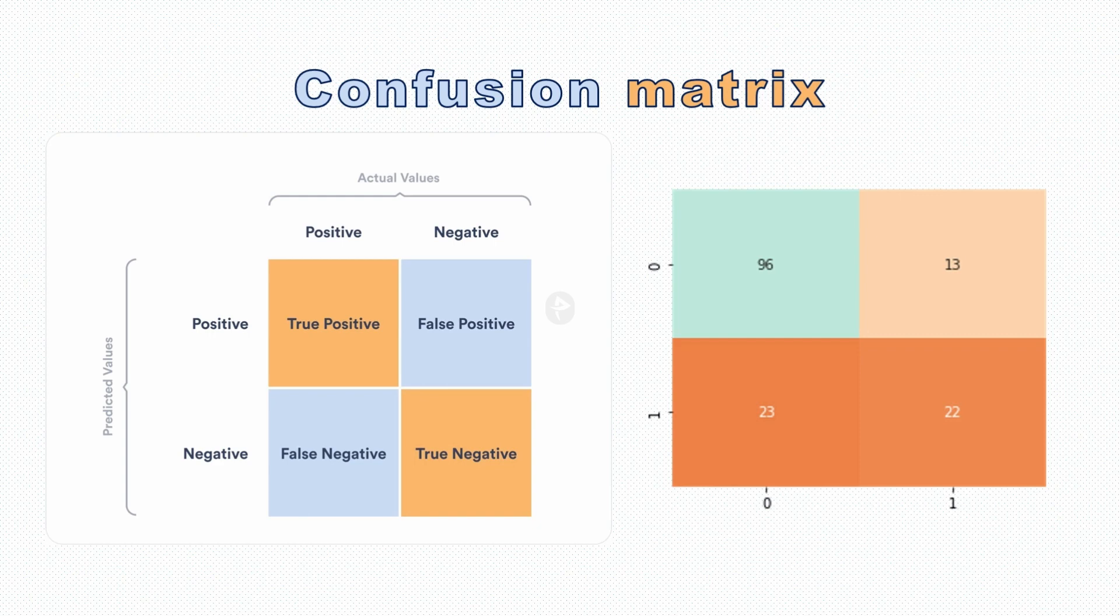The right side image is a confusion matrix from my machine learning problem. On x-axis we have two classes 0 and 1. Same on the y-axis we have two classes 0 and 1. The difference is the x-axis has the actual values and y-axis has the predicted values from machine learning model. We can see the value 96 there on 0,0, which means the actual value is 0 and the machine predicted value is also 0. So in 96 cases the machine predicted correctly. But below that, in 23 cases the actual value is 0 but the machine predicted as 1.